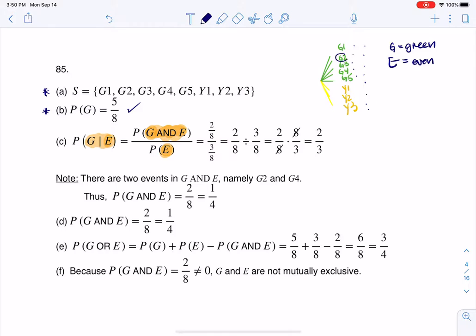So we want green and even over the probability of even. So green and even, we see that there are two green and evens out of the eight possibilities. The even in general, there are 1, 2, 3 out of the eight possibilities. 2/8 divided by 3/8 is 2/8 times 8/3. You can see the 8ths cancel out, and there I go with my 2/3.